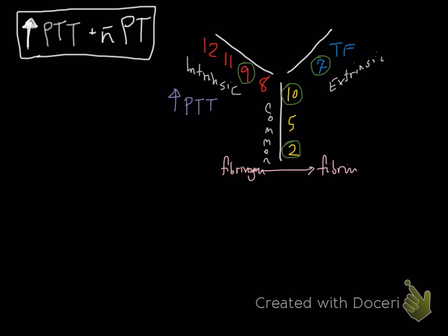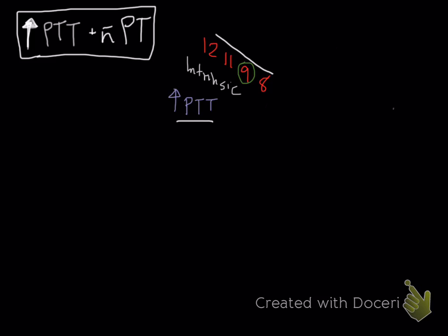We look at our PT and PTT. In this case our PTT is increased, which tests our intrinsic and common pathways, but we have a normal PT. If you have one normal while the other's prolonged, it means your common pathway is normal. We can rule out anything being wrong in the common pathway, and because your PT is normal, your extrinsic path is normal. That really narrows us down to our intrinsic pathway.